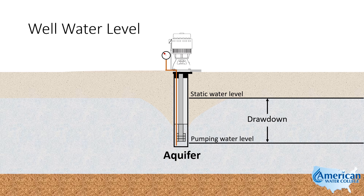One type of well problem is determining the static water level in a well. When we're talking about static water level, they'll give you information such as the length of your air line or bubbler tube, and they'll give you the pressure on the gauge when the pump is not running and when the pump is running. You can use that information to calculate drawdown — the difference between your pumping water level and your static water level — or to calculate static water level. Static water level is the distance between the surface of the water and ground level.